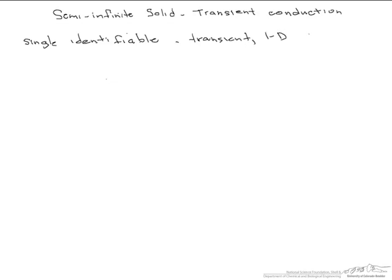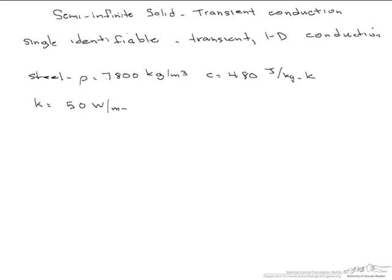We're going to look at an example of this. We're going to model a slab of steel. It has a density of 7800 kilograms per meter cubed, its heat capacity is 480 joules per kilogram K, its thermal conductivity is 50 watts per meter K. This slab is initially at 300 degrees C. We have water that is flowing over it at a temperature of 25 degrees C, providing a constant surface temperature.